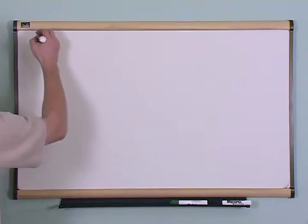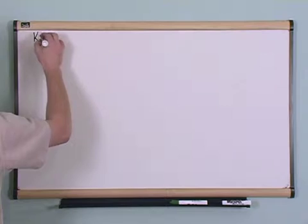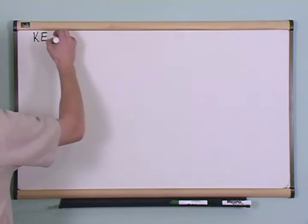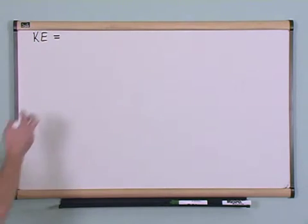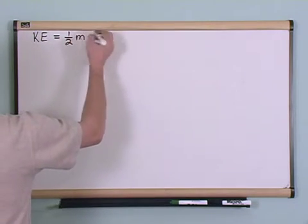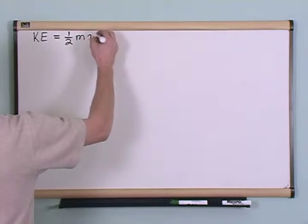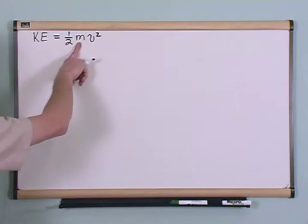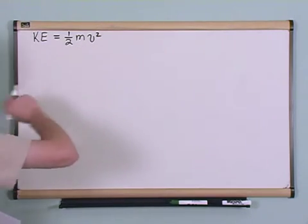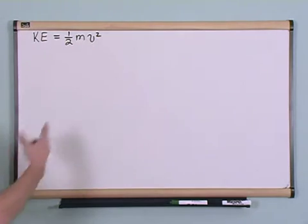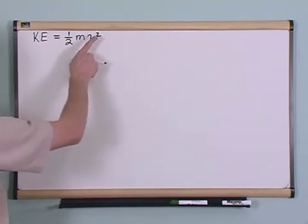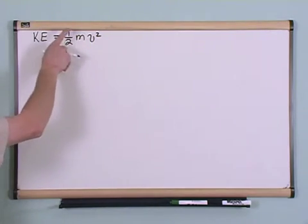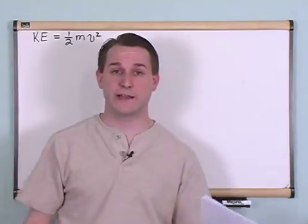Very simply, we have this thing called kinetic energy, abbreviated KE. It's a very simple equation: one half times m, which is the mass of the object, times the velocity squared. So if you have some baseball that has a certain mass and you throw it with a certain velocity, you take the velocity squared, multiply by the mass, multiply by one half, and you have kinetic energy.